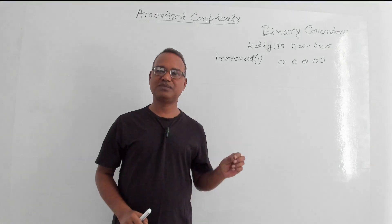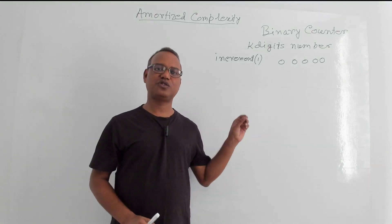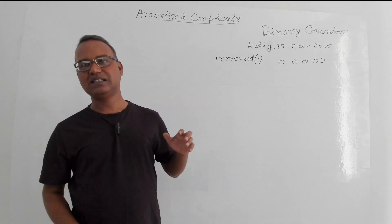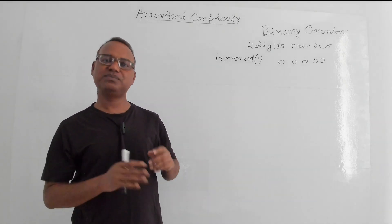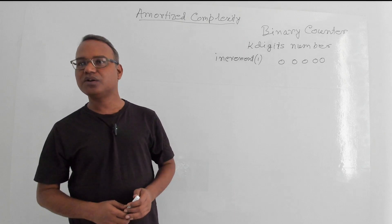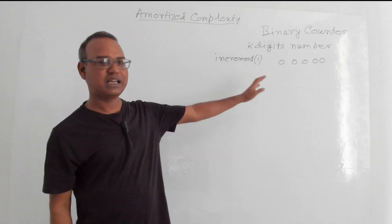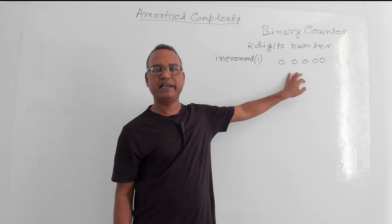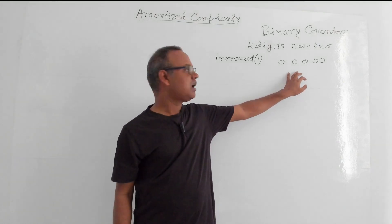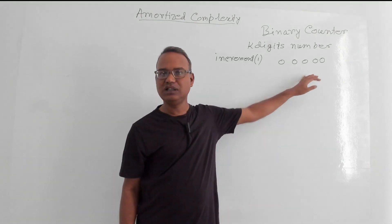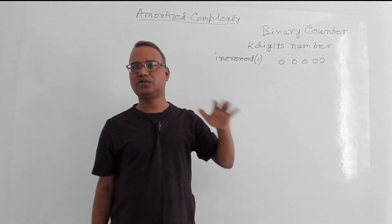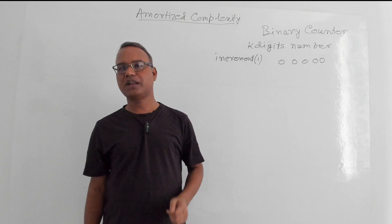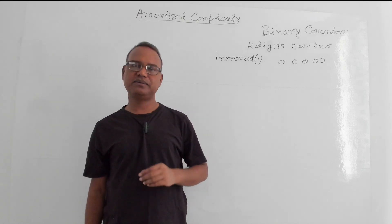For example, the enqueue operation takes cost 1, and that may be overestimated in some particular cases. Here I am taking a very common problem: the binary counter example. A binary counter is a counter that will count 1, 2, 3, 4, 5, 6 in this way, and every time it gets incremented by 1.